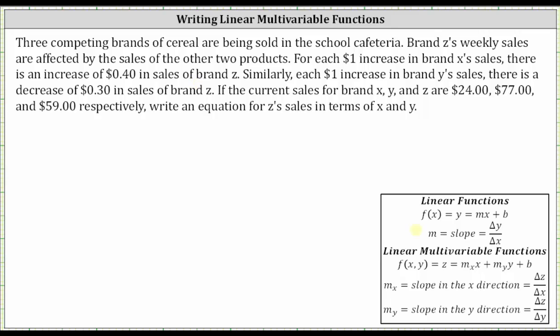Looking at our notes below, a linear multivariable function of two variables must be in the form of f(x,y) or Z equals m sub x times x plus m sub y times y plus b, where m sub x is the slope in the x direction, which is the ratio of the change of Z to the change in X, and m sub y is the slope in the y direction, which gives the ratio of the change of Z to the change in Y.